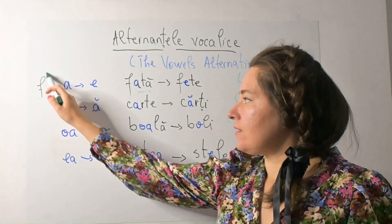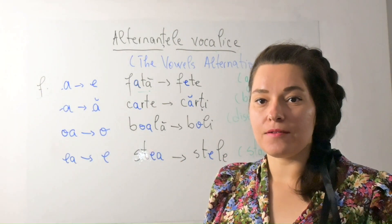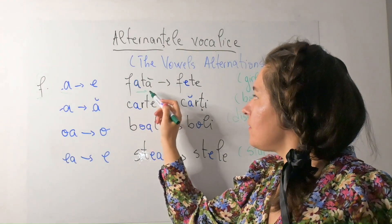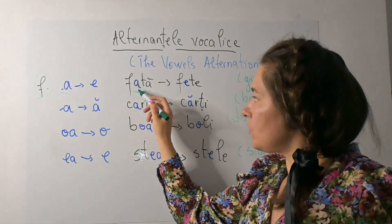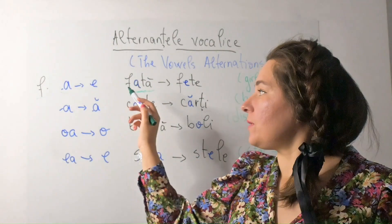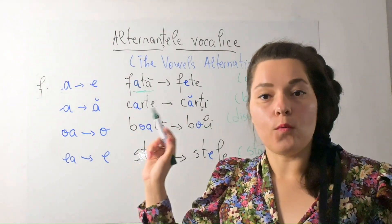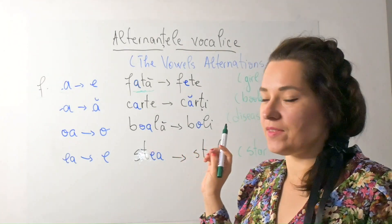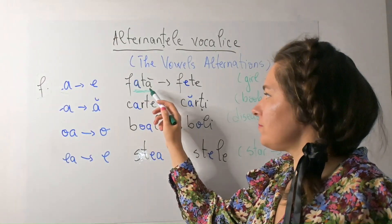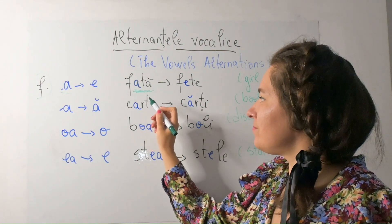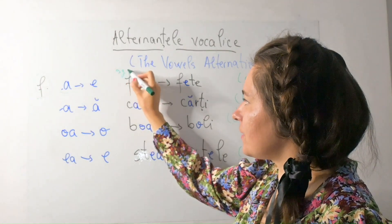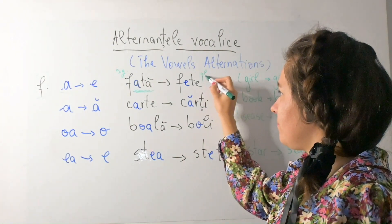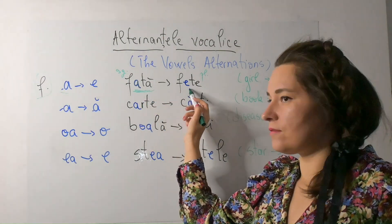We are at the feminine — la feminine, genul feminine. If we have a noun which has the vowel 'a' in the middle, when we pass into the plural, 'a' will change into 'e'. De exemplu: fată (singular) → fete (plural). A girl, girls.